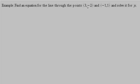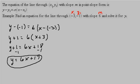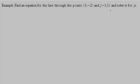Let's look at another one. Find an equation for the line through the points 3, negative 1 and negative 1, 1, and solve it for y. To find the equation of a line, we need the slope. This problem doesn't give us the slope, but it gives us two points on the line, and with these two points we can find the slope.